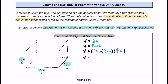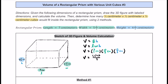There's no cross-canceling here, so we simply multiply straight across. In the numerator, we multiply 7 times 17 times 13, which gives us 1,547. In the denominator, we multiply 1 by 3 by 3, which equals 9. So the volume is 1,547 over 9 cubic centimeters.